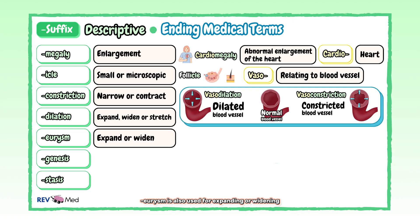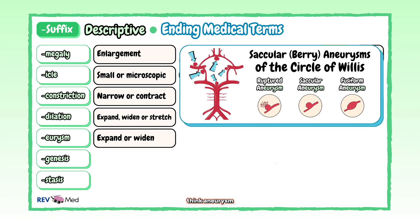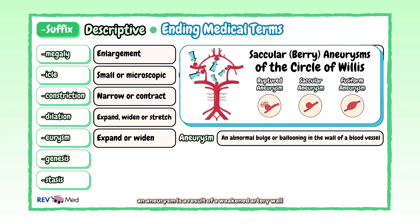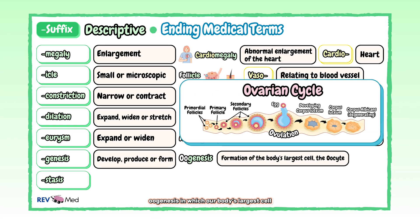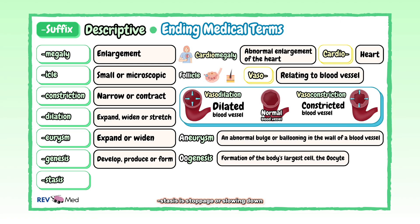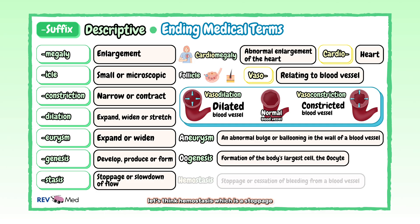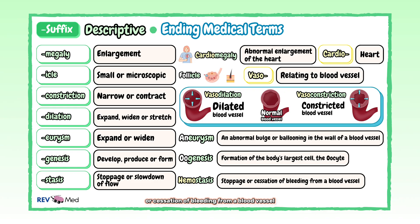"-Eurysm" is also used for expanding or widening — think aneurysm. An aneurysm is the result of a weakened artery wall, so an abnormal bulge or ballooning in the wall of a blood vessel that expands and widens is an aneurysm. "-Genesis" is to develop, produce, or form. Oogenesis is when our body's largest cell, the oocyte, is under the process of formation. "-Stasis" is stoppage or slowing down, like in the flow of blood or bodily fluid. Let's think hemostasis, which is the stoppage or cessation of bleeding from a blood vessel.